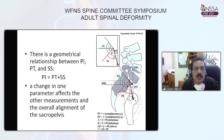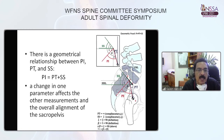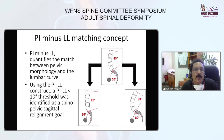There is a geometric relationship between PI, PT, and SS: PI equals the sum of PT and SS. This means a change in one parameter affects the other measurements and the overall alignment of the sacral pelvis.